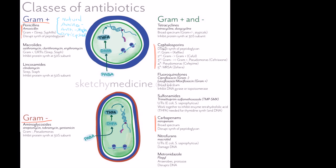Your cephalosporins — cousins to penicillins with about 10% cross-reactivity in allergic patients — go from first generation all the way to the newest fifth generation, though the most common you'll use are first through third. First generation, like Keflex or Ancef, have great gram-positive coverage. As you go from first to third, you increase gram-negative coverage, so by third generation like ceftriaxone you have really good gram-negative coverage. Ceftriaxone is particularly helpful because it crosses the blood-brain barrier, unlike first generation, making it very useful against meningitis.